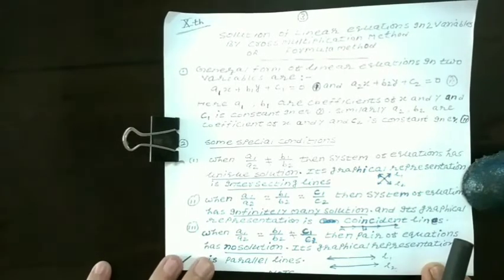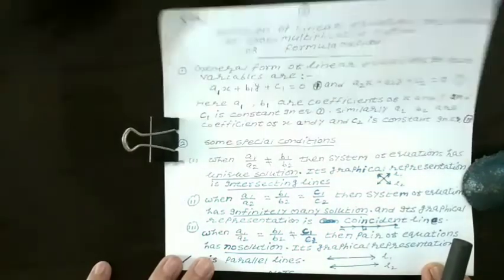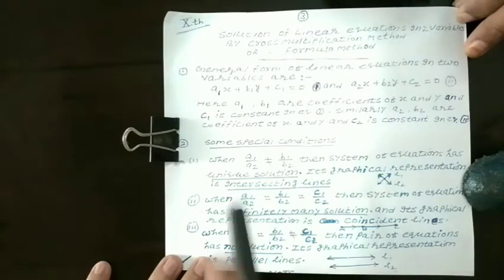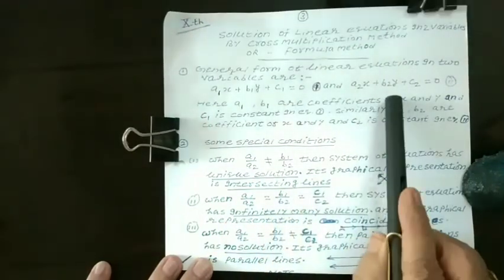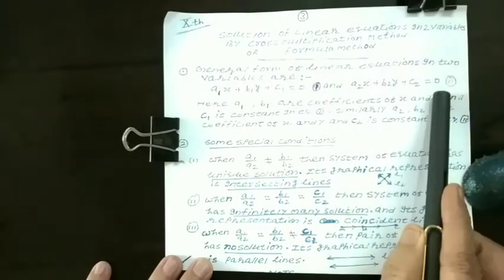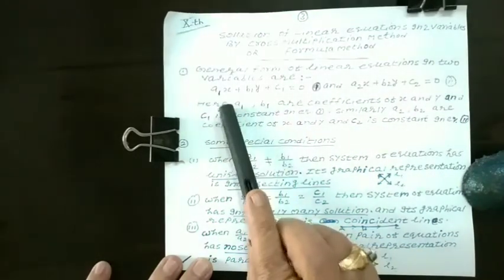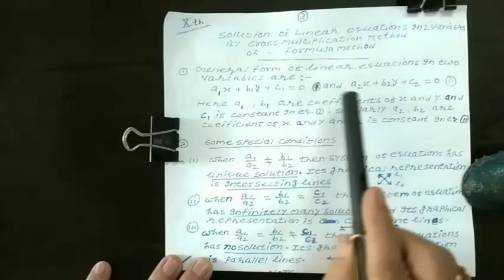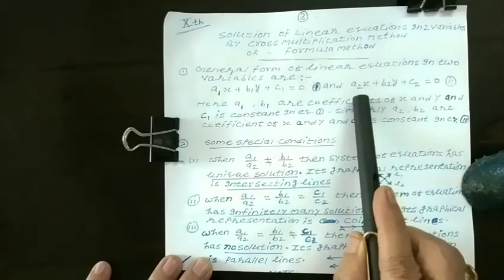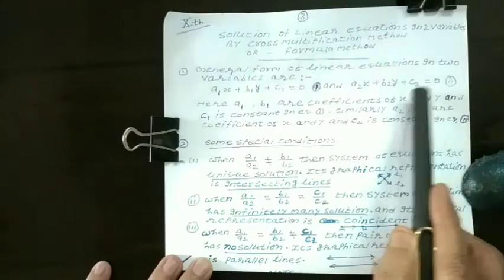Before this, we must know about the general form of linear equations in two variables. It is represented by a1x plus b1y plus c1 equals 0, and a2x plus b2y plus c2 equals 0. Here, a1 and b1 are the coefficients of x and y, and c1 is constant in equation 1. Similarly, a2 and b2 are the coefficients of x and y, and c2 is constant in equation 2.